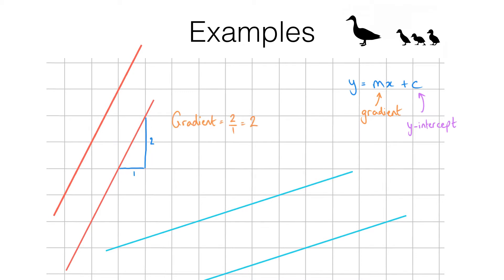And you'll see that this line which is parallel has the exact same gradient. For every one step across we need to go two steps up.